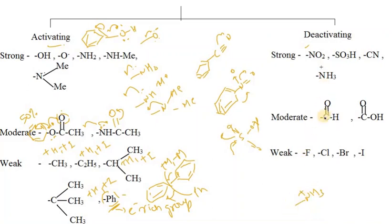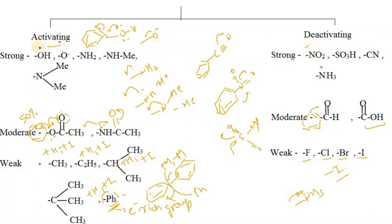NH3⁺ has a strong -I effect and always withdraws electrons from the ring, making it a strong deactivating group. Halogens — fluorine, chlorine, bromine, iodine — show a -I effect, reducing electron density from the ring, so they are weak deactivating groups. Groups that increase electron density are activating; groups that decrease ring electron density are deactivating.